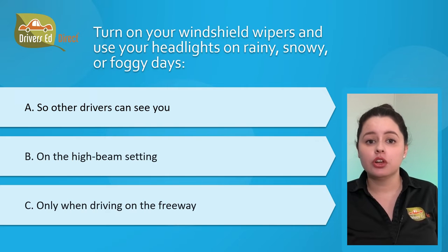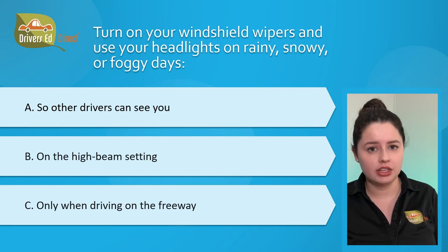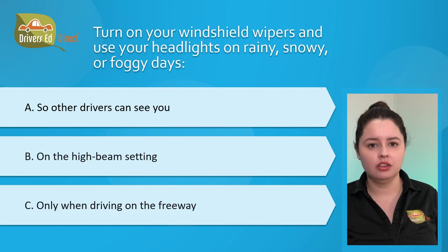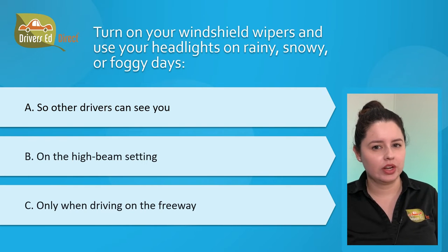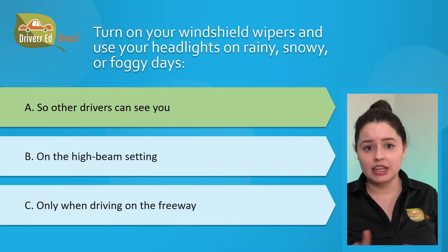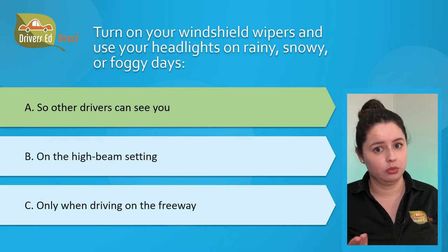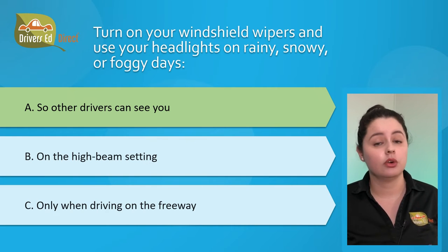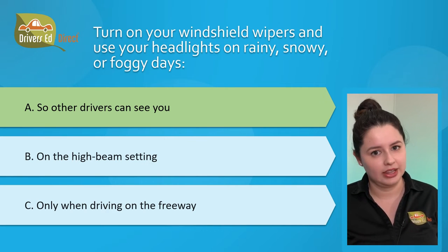Question number one: turn on your windshield wipers and use your headlights on rainy, snowy, or foggy days. A) so other drivers can see you, B) on the high beam setting, or C) only when driving on the freeway. The correct answer is A, so other drivers can see you. Anytime you have trouble seeing other cars, other drivers will have trouble seeing you as well. So when weather conditions require you to use your windshield wipers, you must also use your headlights.